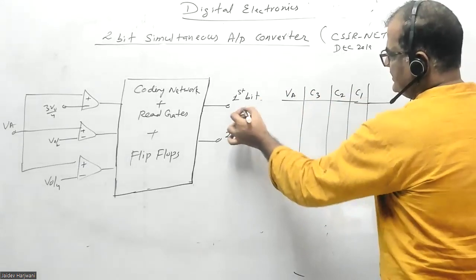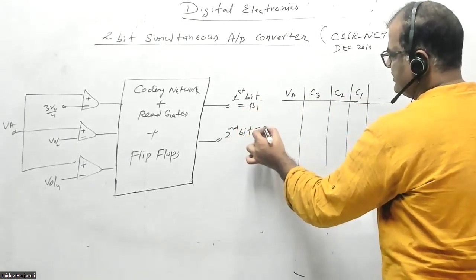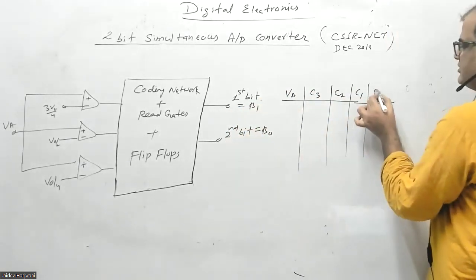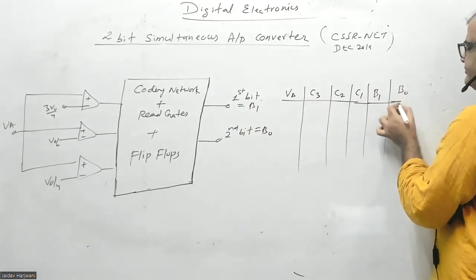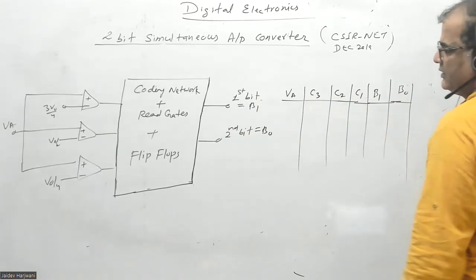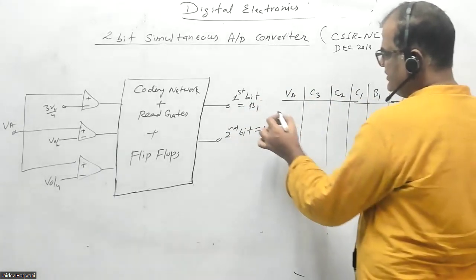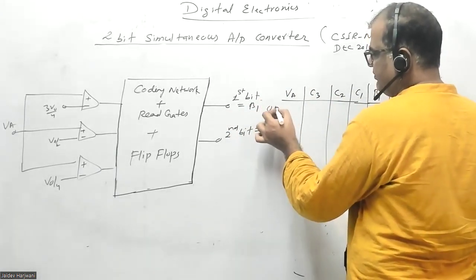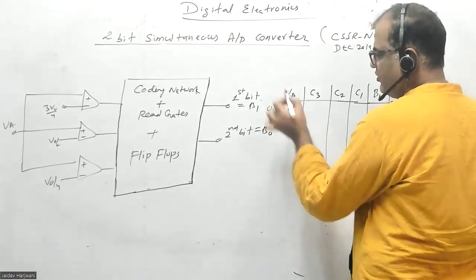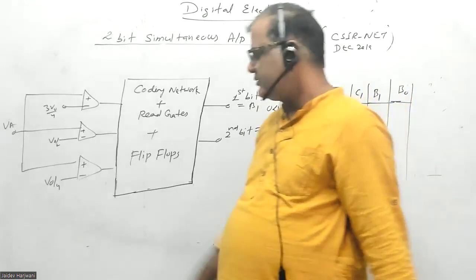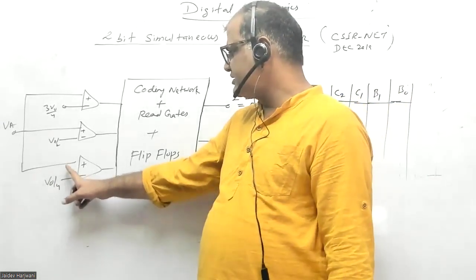I want to convert this into a digital output. This is my b1 term, this is my b0. Now whenever my applied voltage VA is less than V0 by 4...